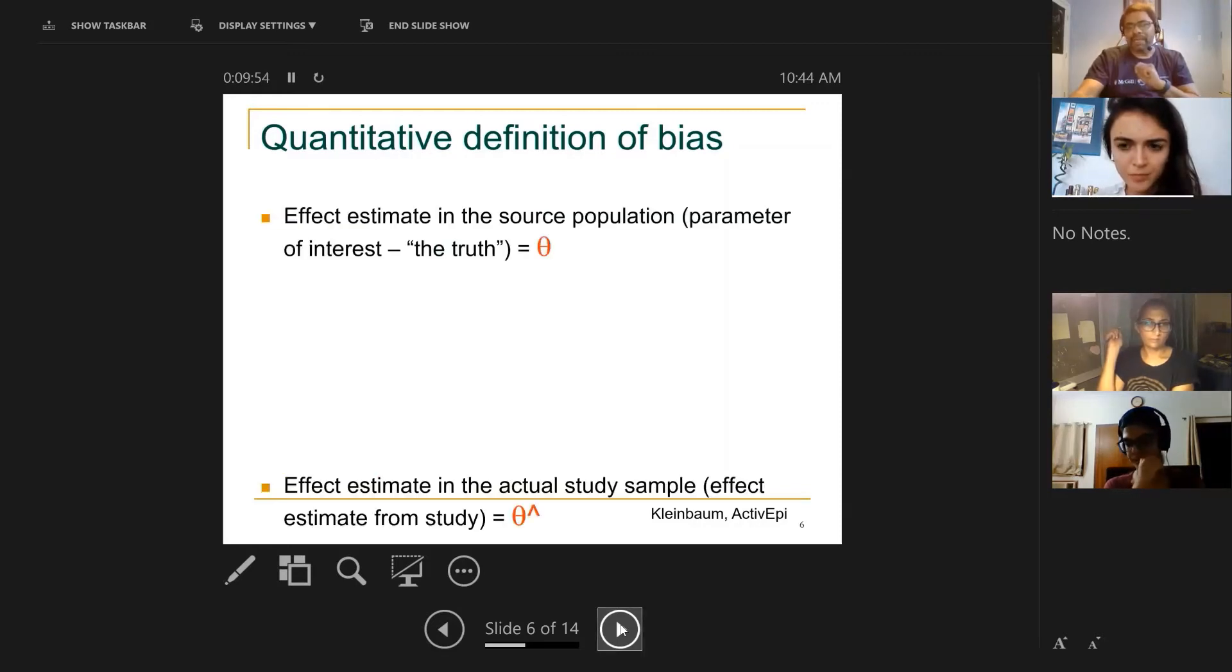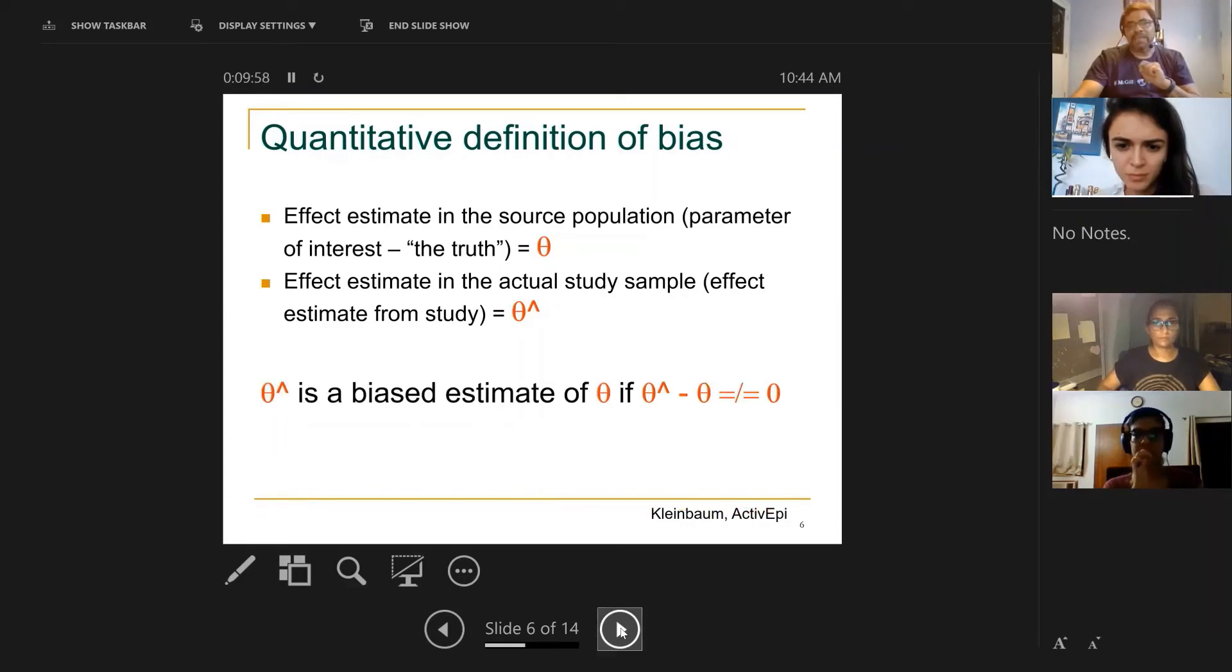We also use a quantitative definition of bias. You have an effect estimate in the mother population that you study. For example, there should be only one prevalence of coronavirus antibodies in all of Santa Clara County. Let's say that percentage is 5%, and God told us it's 5%. That truth is indicated here as theta, the Greek symbol theta. But what we get from our little study of 3,000 people, 1,000 people, 200 people is theta hat. If theta and theta hat are substantially different from each other, that difference is called bias.